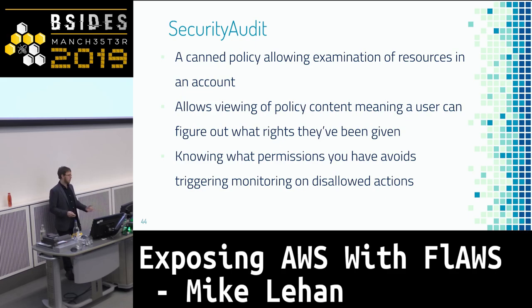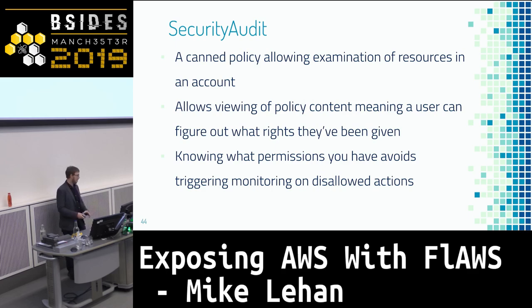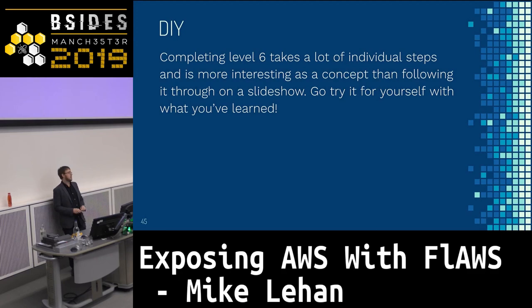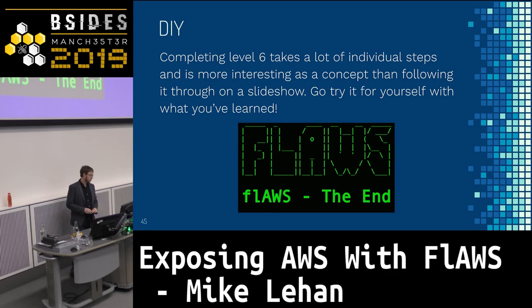It also allows you to enumerate things like users. If you find a username, you can check a publicly available database of leaked passwords for that username and potentially get in that way. Exploiting this on Flaws.cloud involves lots of individual steps, each quite complex and specific to AWS resources. I encourage you to go and try it yourself with what you've learned — if you do, you'll get through to the end of Flaws.cloud.